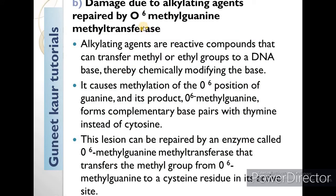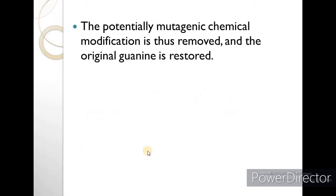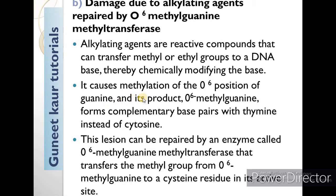The second mechanism is damage due to alkylating agents, repaired by O6-methylguanine methyltransferase. Alkylating agents are reactive compounds that can transfer methyl or ethyl groups to a DNA base, thereby chemically modifying the base. We can see here the 6th position oxygen is connected, leading to the formation of O6-methylguanine nucleotide. This causes methylation at the O6-position of guanine, and the product O6-methylguanine forms complementary base pairs with thymine instead of cytosine.